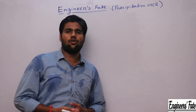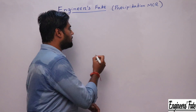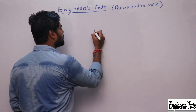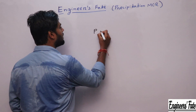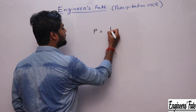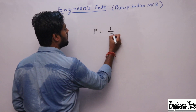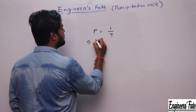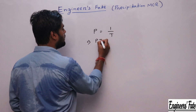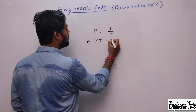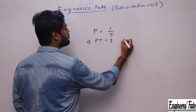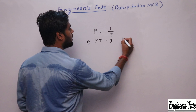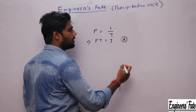We know probability P = 1 / return period = 1/T. So P·T = 1, and option A is correct.